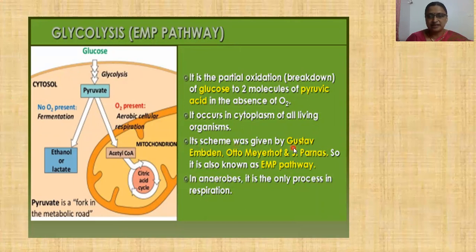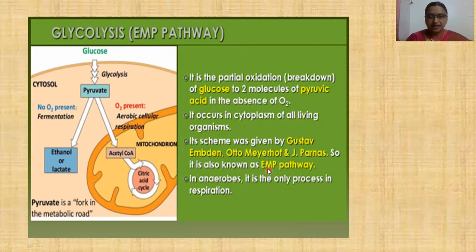The scheme of glycolysis was given by scientists Gustav Embden, Otto Meyerhoff, and J. Parnas; therefore it is called the EMP pathway. Glycolysis is a partial oxidation or breakdown of glucose into two molecules of pyruvic acid in the absence of oxygen, occurring in the cytoplasm of all living organisms.